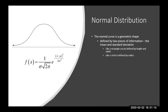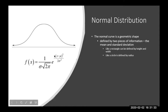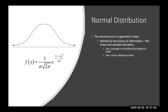The normal curve is a geometric shape defined by two pieces of information: the mean and the standard deviation. If you look at the formula, the only two things that vary are the mean and the standard deviation. The mean tells you where on the scale you place the distribution, and the standard deviation tells you how fat or skinny to make it. Just like a rectangle is defined by height and width, or a circle by its radius, the normal distribution is defined by the mean and standard deviation.